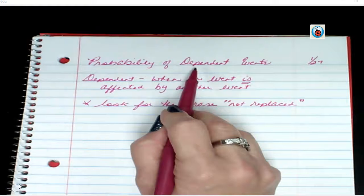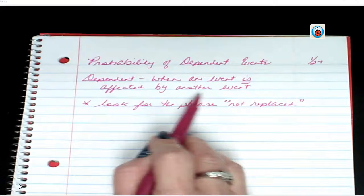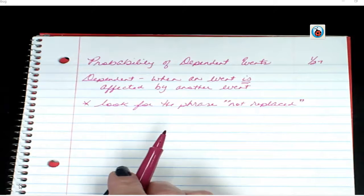Dependent is when an event is affected by another event. You want to look for phrases like not replaced or you kept it in your pocket or you gave it away.